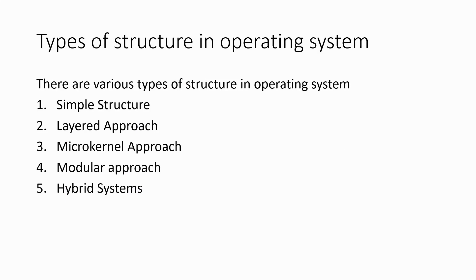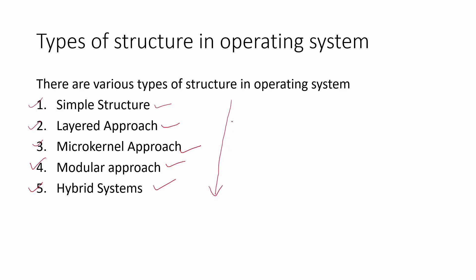There are five basic structures of the operating system. The first one is the simple structure, the next is layered architecture, the third is the microkernel approach, the fourth is the modular approach, and the fifth is the hybrid system. This represents an evolution and development path from simple structure all the way to the hybrid structure.